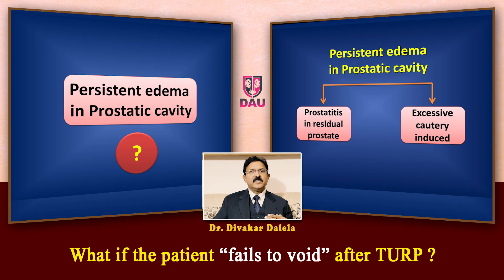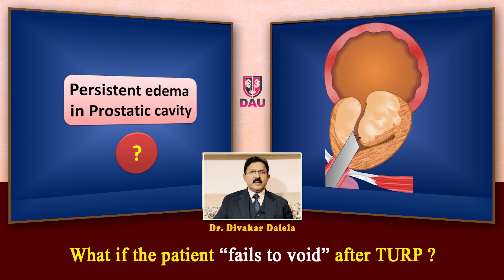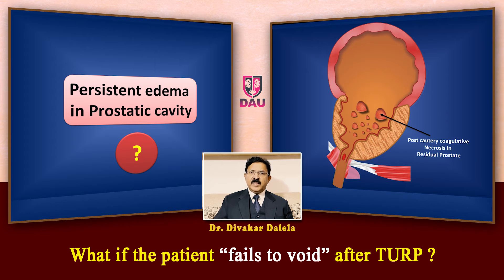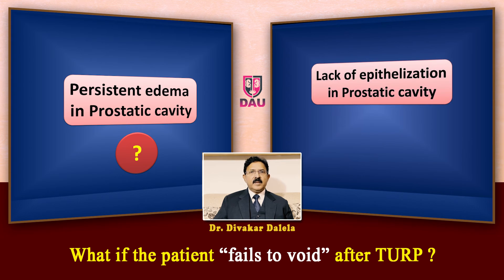If you have either of these reasons, the prostate tissue will become edematous. When you remove the catheter three days after TURP, the edema might not have resolved. The prostate cavity may have some degree of reactive prostatitis in the peripheral prostate, or you may have created zones of focal necrosis at multiple places following the cautery.